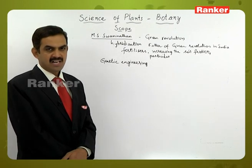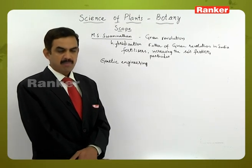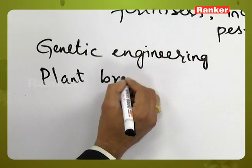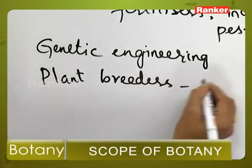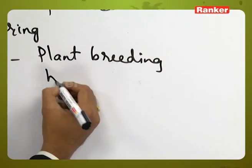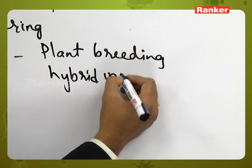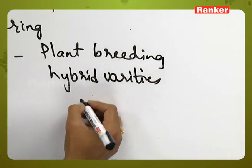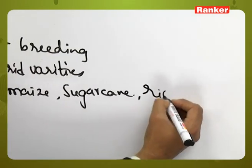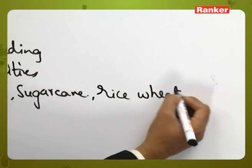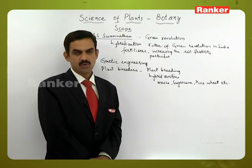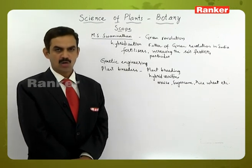Scientists have done many experiments for plant development. Plant breeders have also started plant breeding, producing hybrid varieties in maize, sugarcane, rice, wheat, and others. These hybrid varieties are produced by plant breeding techniques and have also helped in increasing crop plant production.